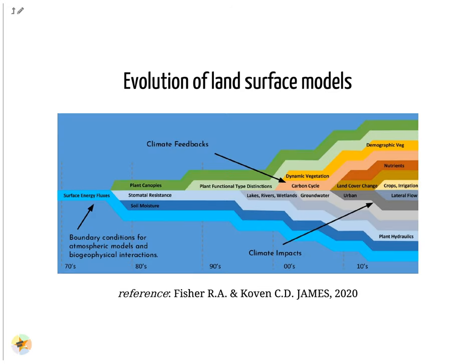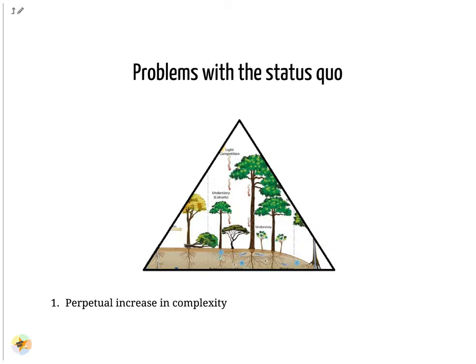Climate change impacts such as drought and fire are mediated by plant biophysical responses to elevated CO2, which are themselves impacted by limitations imposed by nutrient limitations on growth. Developing land surface models by adding complexity in already complex codes is not manageable anymore. To face this perpetual increase in complexity, the community needs to better organize code developments.